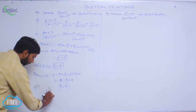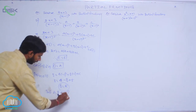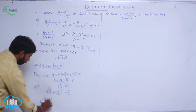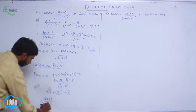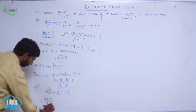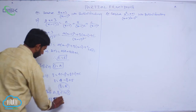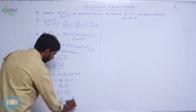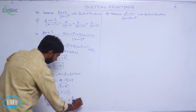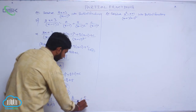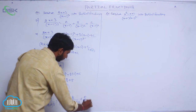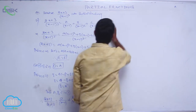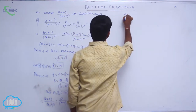Substituting A, B, C into condition 1: (2x + 3) / (x - 1)³ = 0/(x - 1) + 2/(x - 1)² + 5/(x - 1)³, which simplifies to 2/(x - 1)² + 5/(x - 1)³. Now consider another method for this problem.